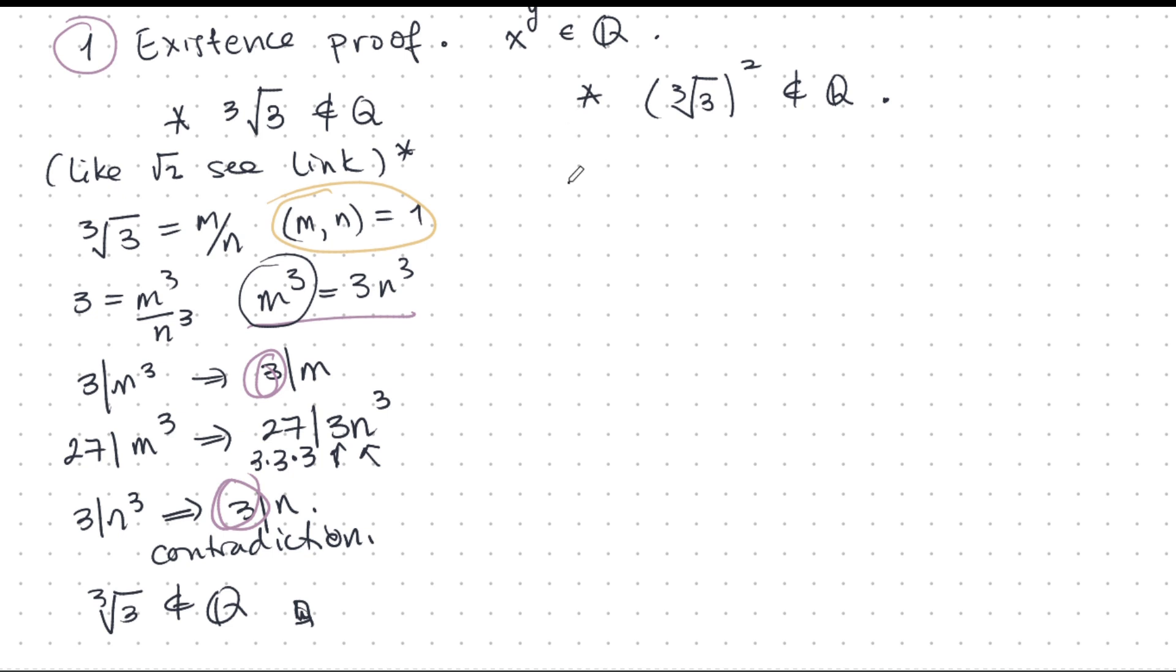Now for the next one, we need a lemma. If r is a rational number and r is not 0, and x is an irrational number, then this implies that r times x is irrational.